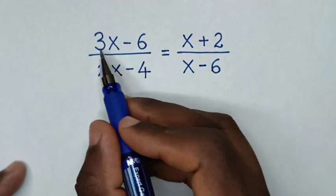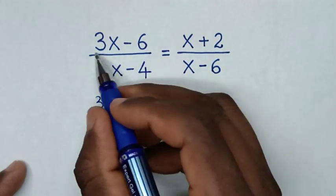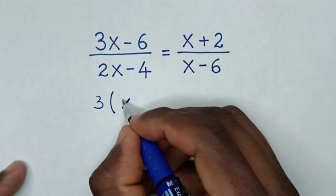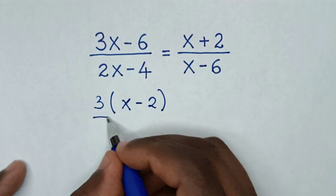So from the numerator, 3 is common. So we take 3 out of the bracket, then 3x divided by 3 is x, negative 6 divided by 3 is negative 2.